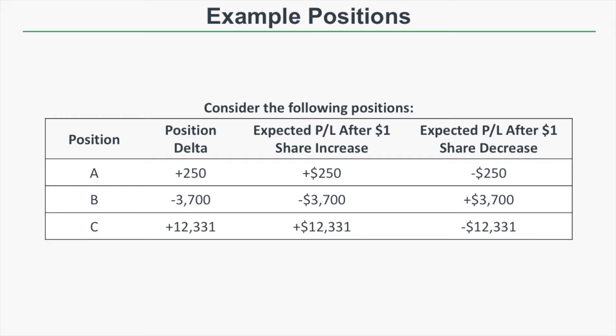Let's look at a few example positions: position A, position B, and position C — each with their own directional exposure. Position A has a position Delta of plus 250, meaning if the stock price increases by one dollar, the expected profit is $250, and if the stock decreases by one dollar, the expected loss is negative $250. Position B has a Delta of negative 3,700, meaning if the stock price increases by one dollar, position B is expected to lose $3,700. And if the stock price falls by one dollar, position B is expected to profit by $3,700.